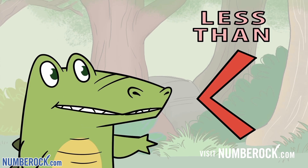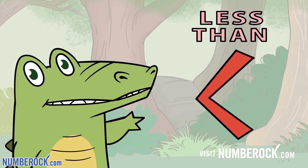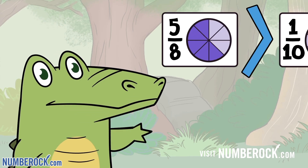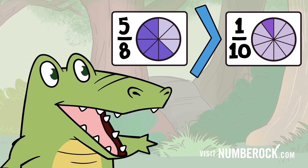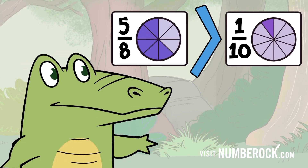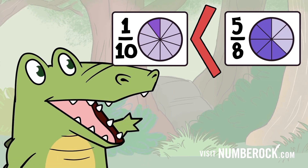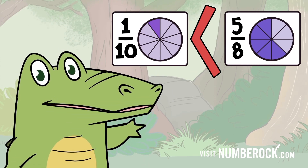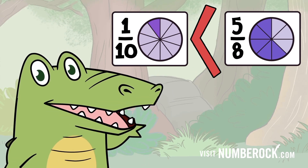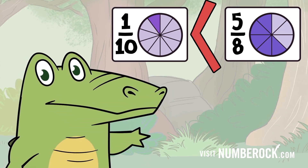The larger fraction always goes on the open side of the angle. For example, this reads as 5/8 is greater than 1/10, and this is read as 1/10 is less than 5/8.